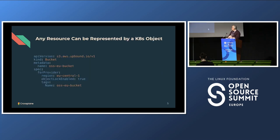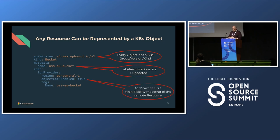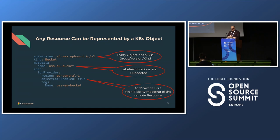Let's say we want to provision a bucket in AWS. We have a manifest that specifies what kind of bucket we want. You can see we have groups, versions, and kinds — this is a CRD being used to create a bucket. It supports all Kubernetes metadata, labels, and annotations. A Crossplane resource is a high-fidelity representation of a cloud provider's API, with pretty much all the settings you could do in an S3 bucket — there are hundreds of settings, plus other CRDs for bucket encryption, object storage, and so on.